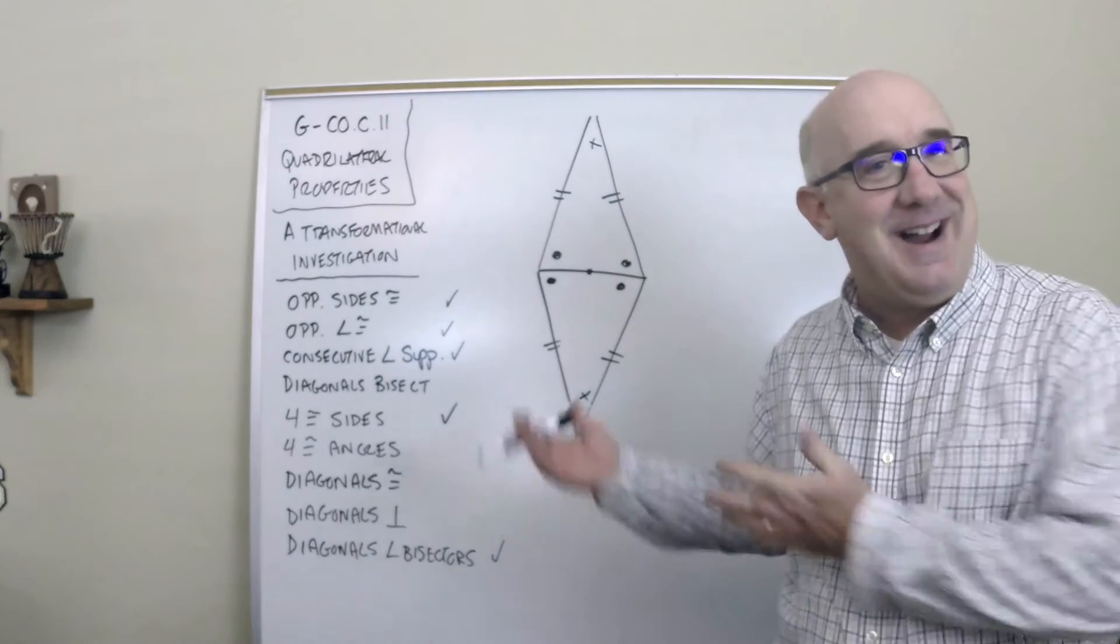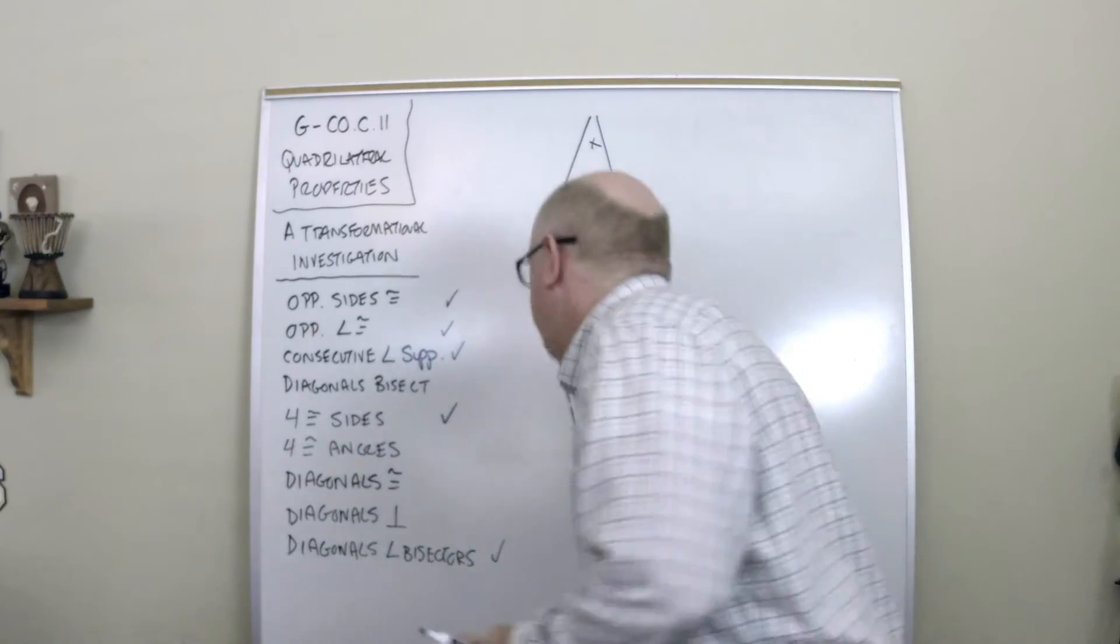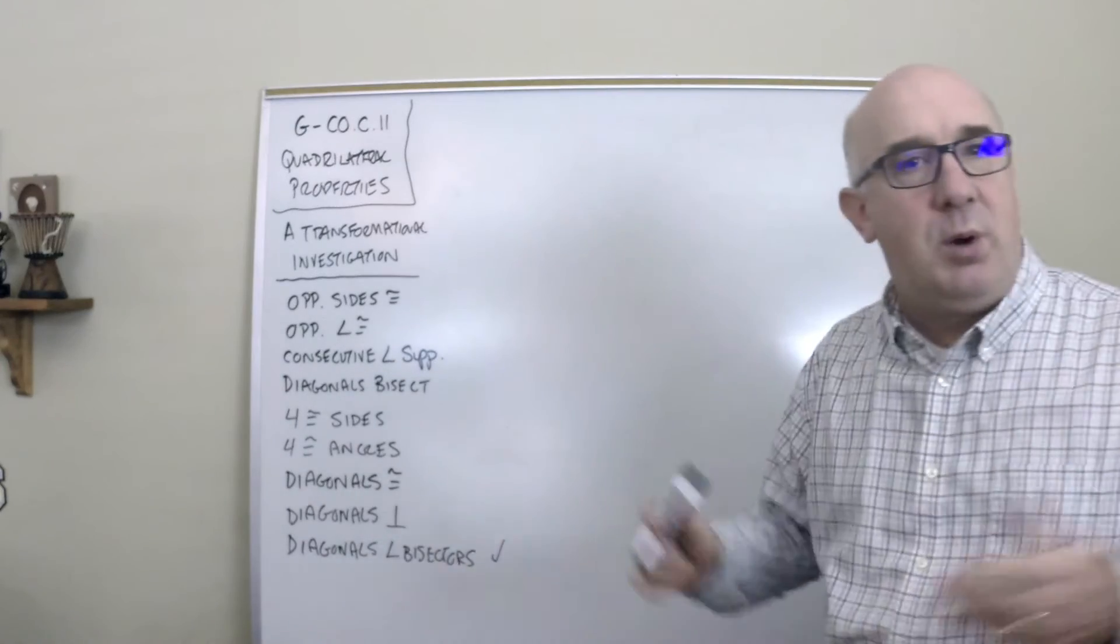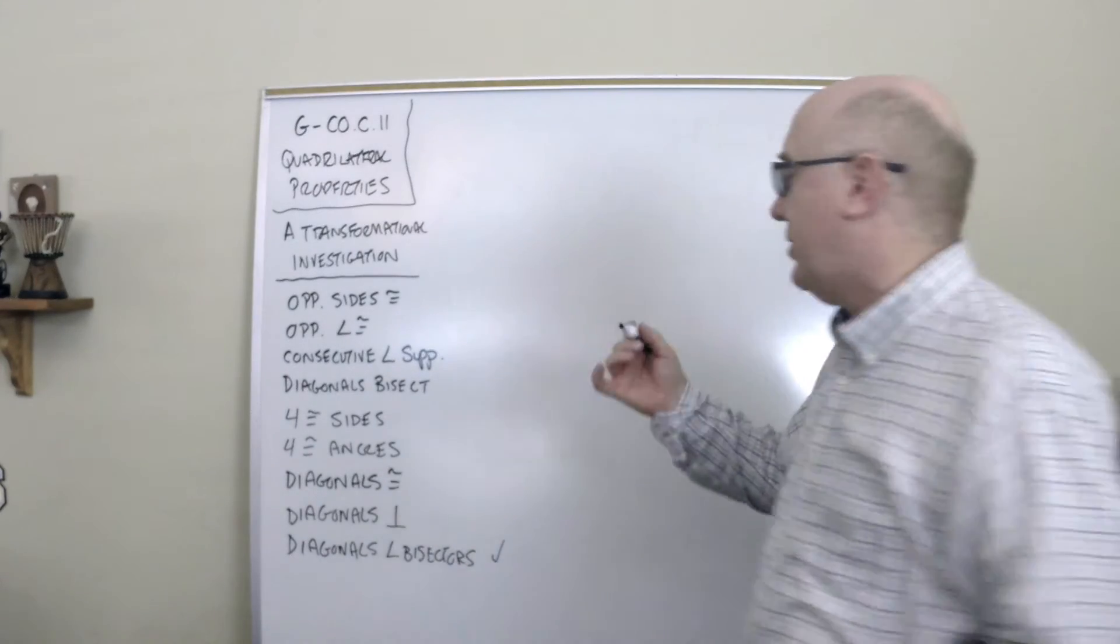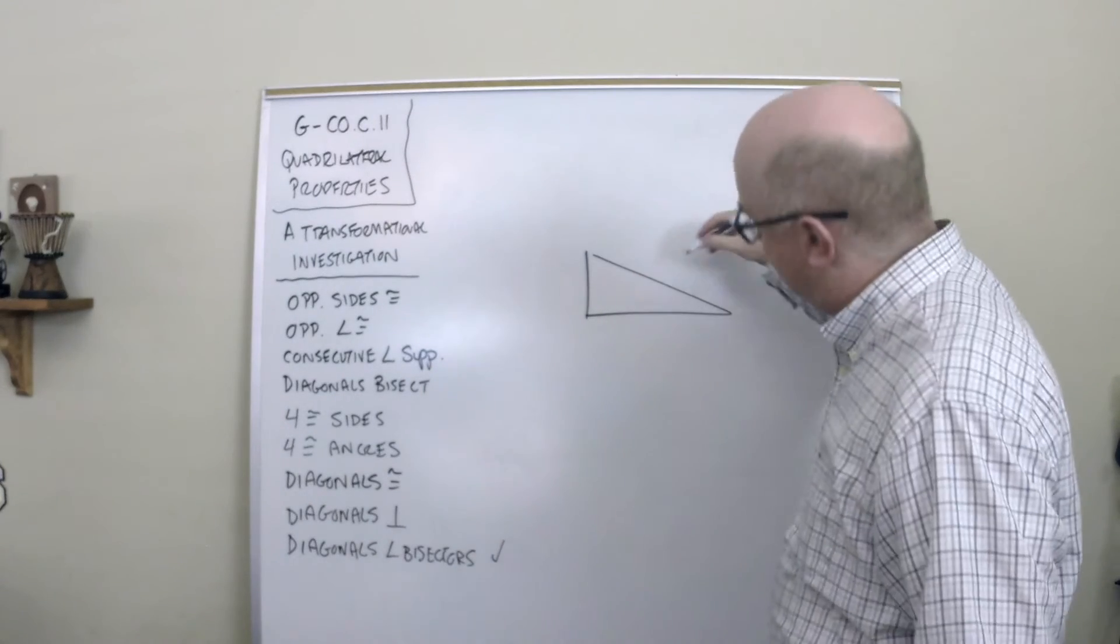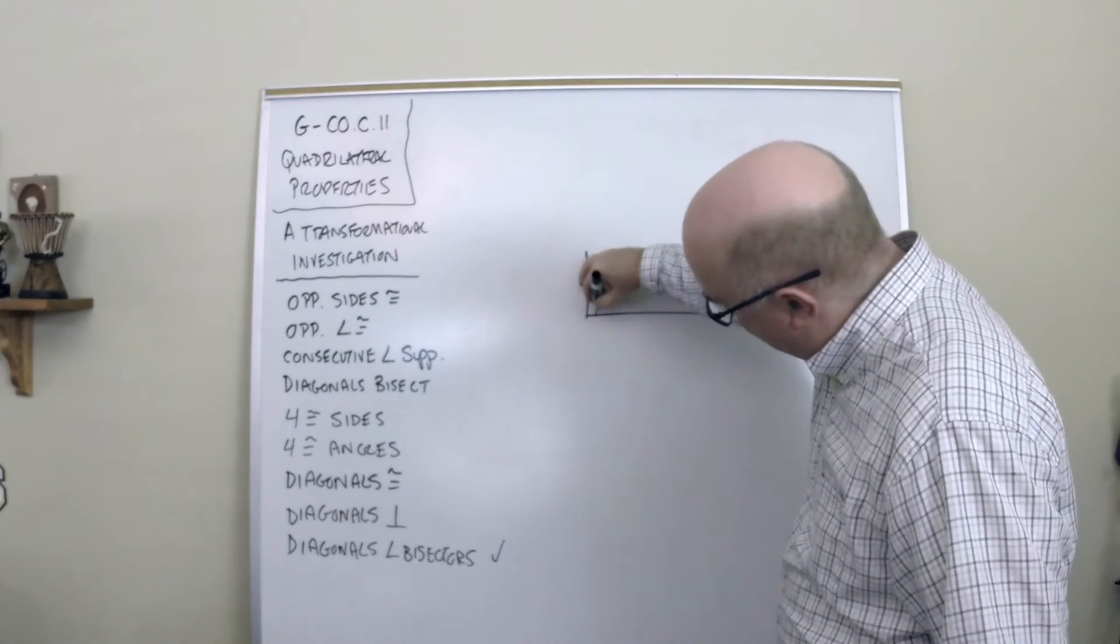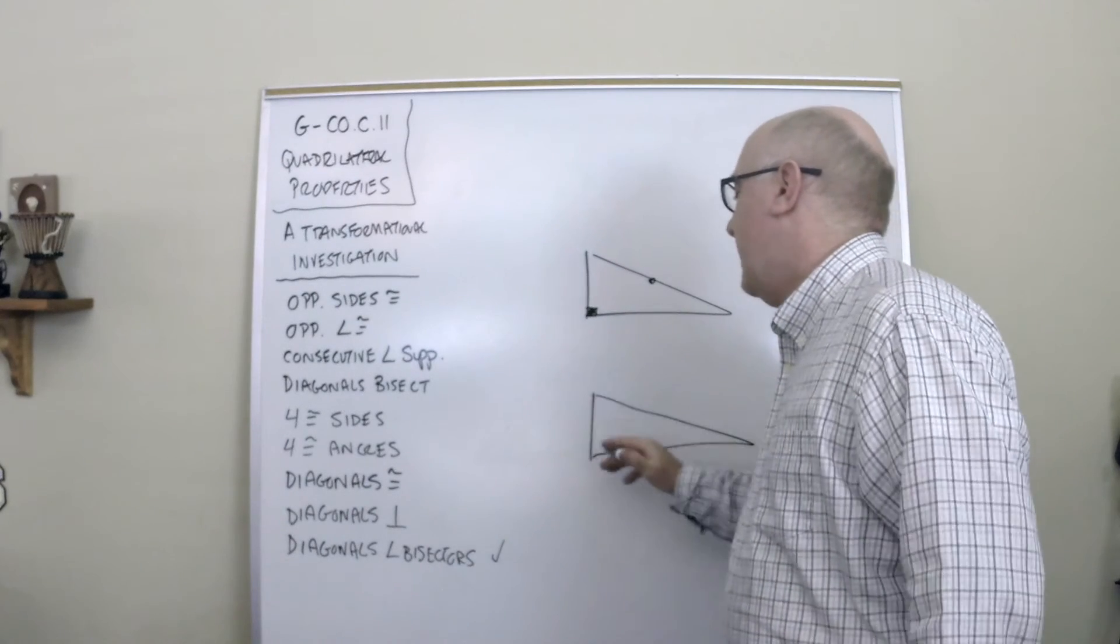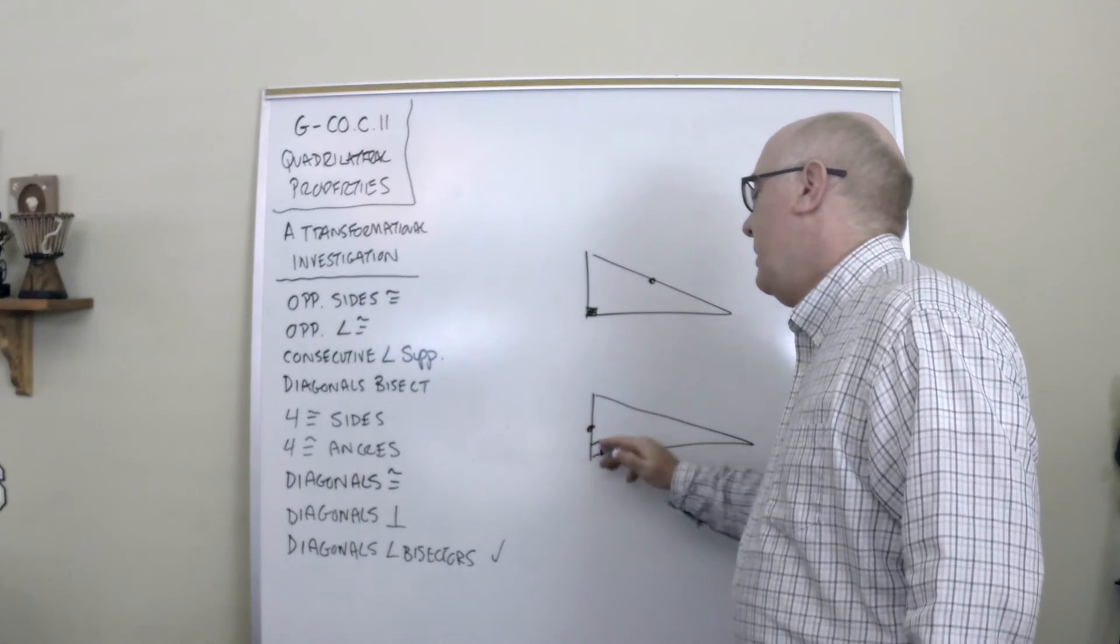I'm not going to do a bunch of them, but just to show you what would have happened if it was a right triangle and we rotated it, let's say about its midpoint here. There are different ways to rotate this. You could rotate this right angle about here and you would get this shape.